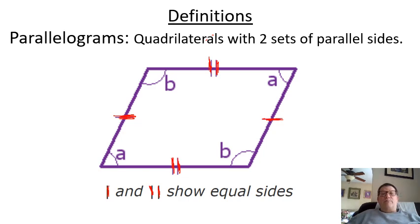Now they also have opposite angles. Opposite angles are going to be equal. So these two are going to be equal, and then this one here and this one here are going to be equal. So those are the attributes of a parallelogram.